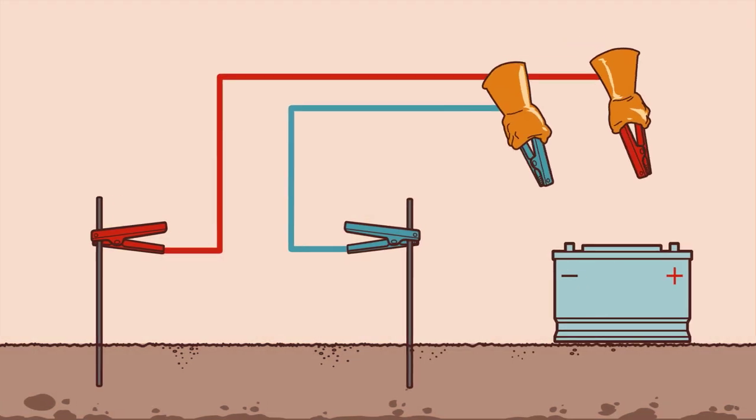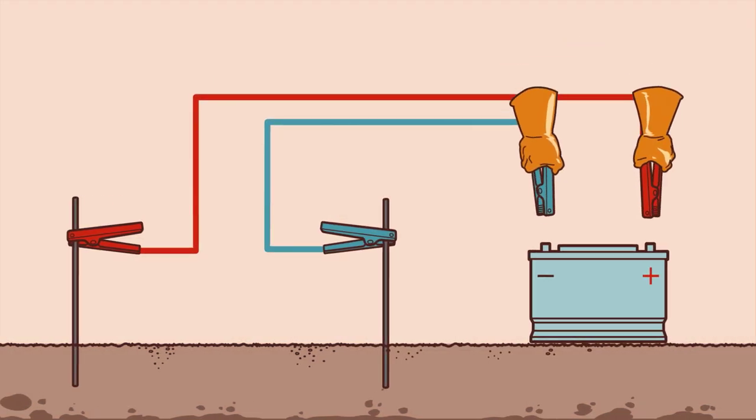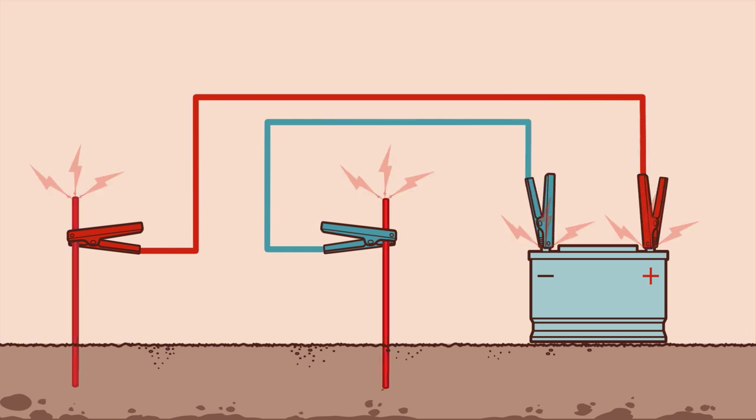Extend the cables as far from the rods as they'll go and attach them to the battery. Warning kids at home, do not go near the rods while they're hot.